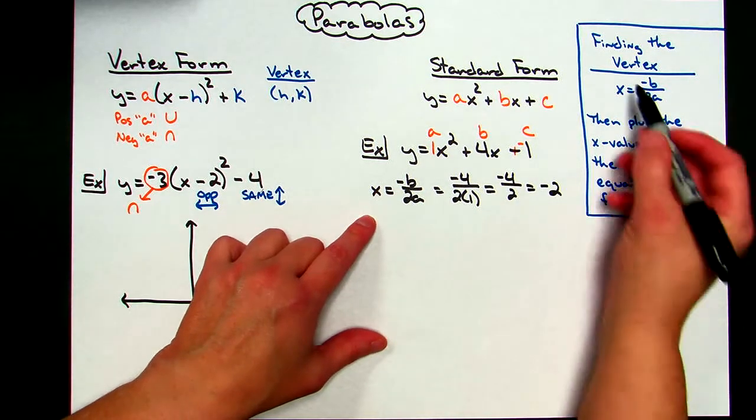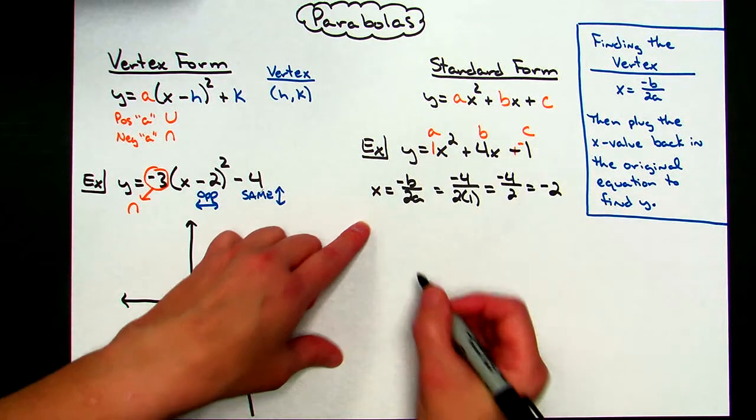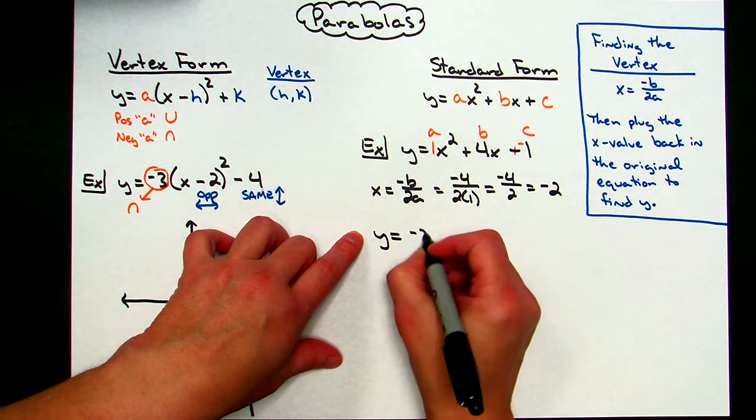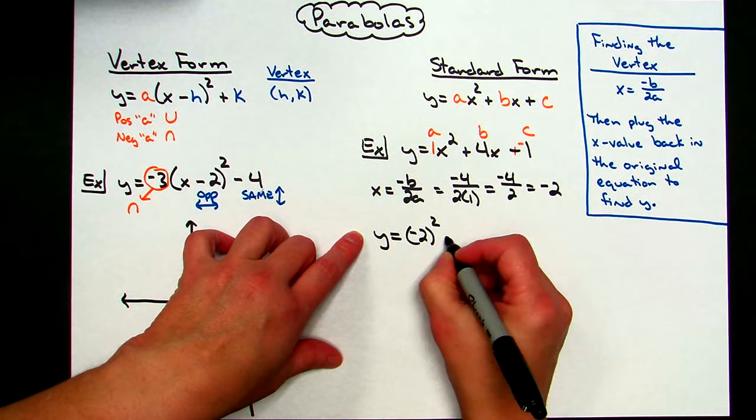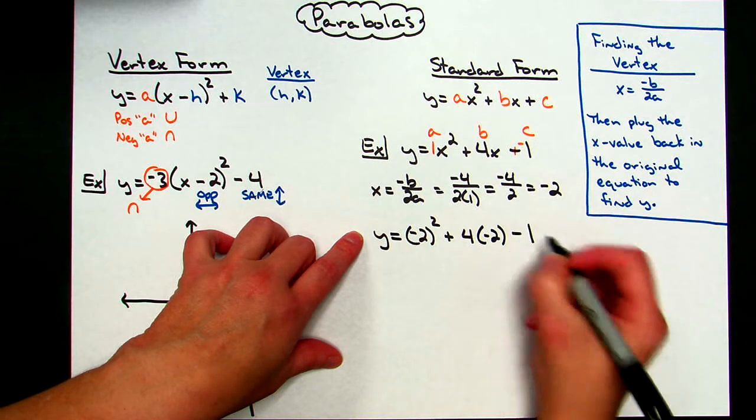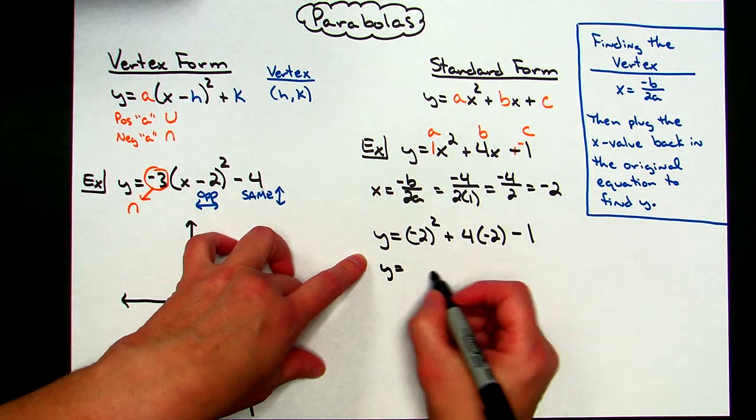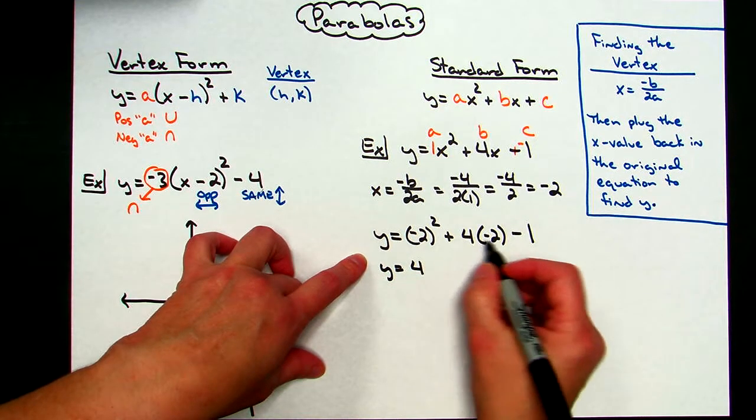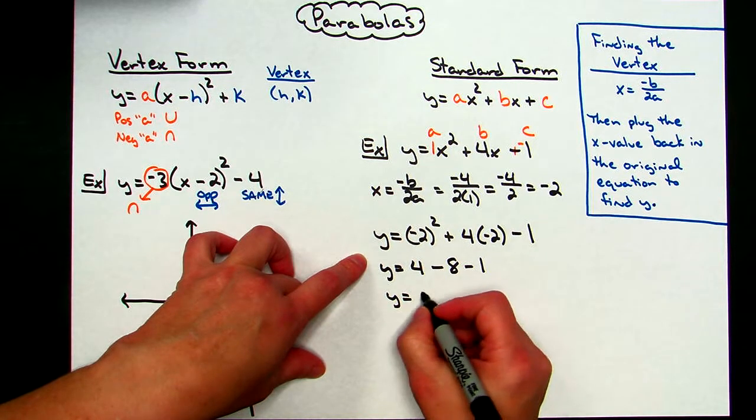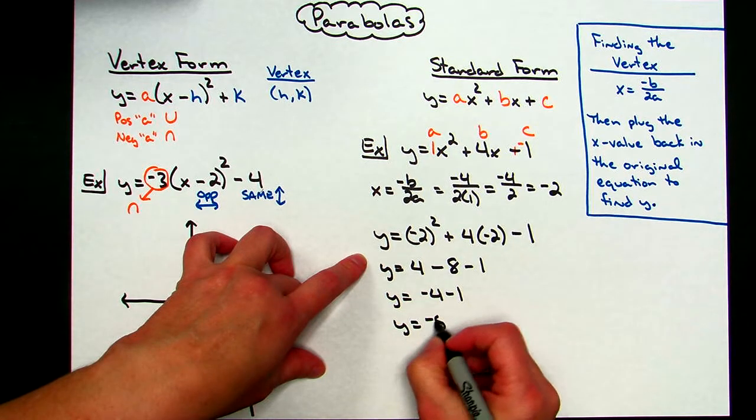Now if I want to find the y coordinate of that vertex, I'm going to take this -2, I'm going to plug it back into this equation. So y equals, plugging in the -2 for x, I've got (-2)² + 4(-2) - 1. Doing a little bit of arithmetic here: -2 squared is going to give me 4 - 8 - 1. Continuing to simplify: -4 - 1 is going to give me a y of -5.